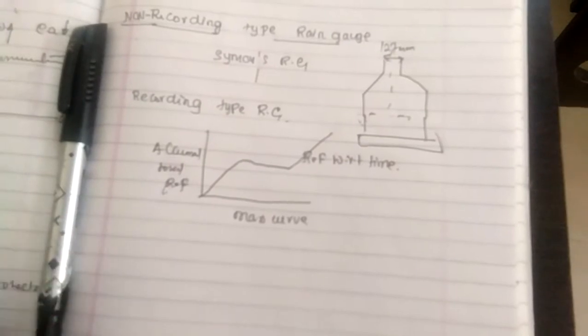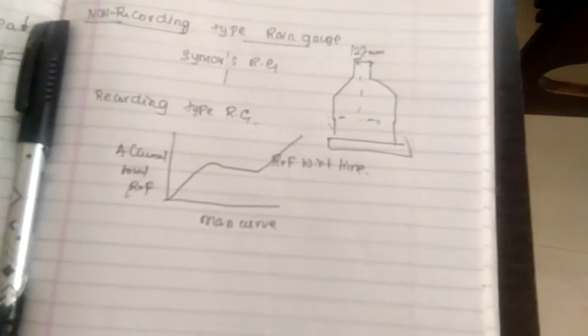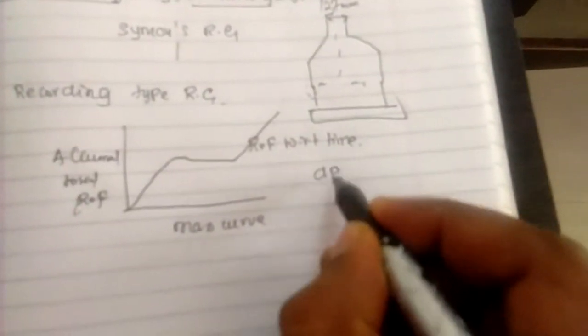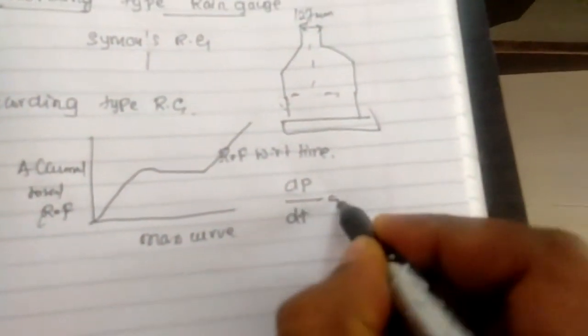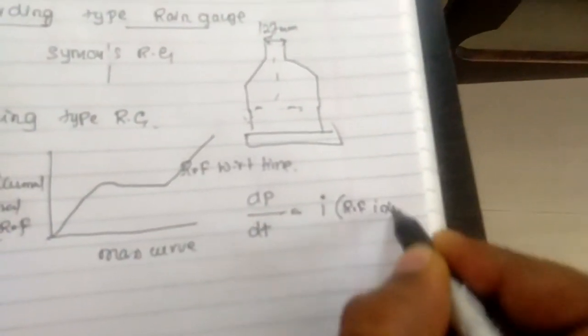The y-axis shows accumulated total rainfall and the x-axis shows time, creating a mass curve. dp/dt, precipitation with respect to time, gives us rainfall intensity.